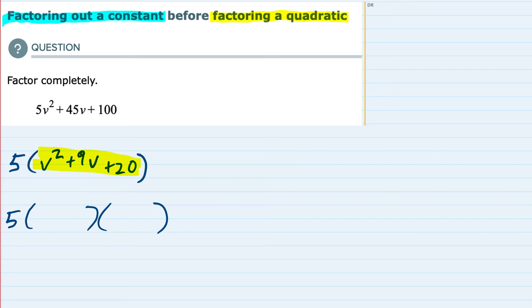And since this is a v², it has to be v and v. And then I'm going to look at my factors of 20.